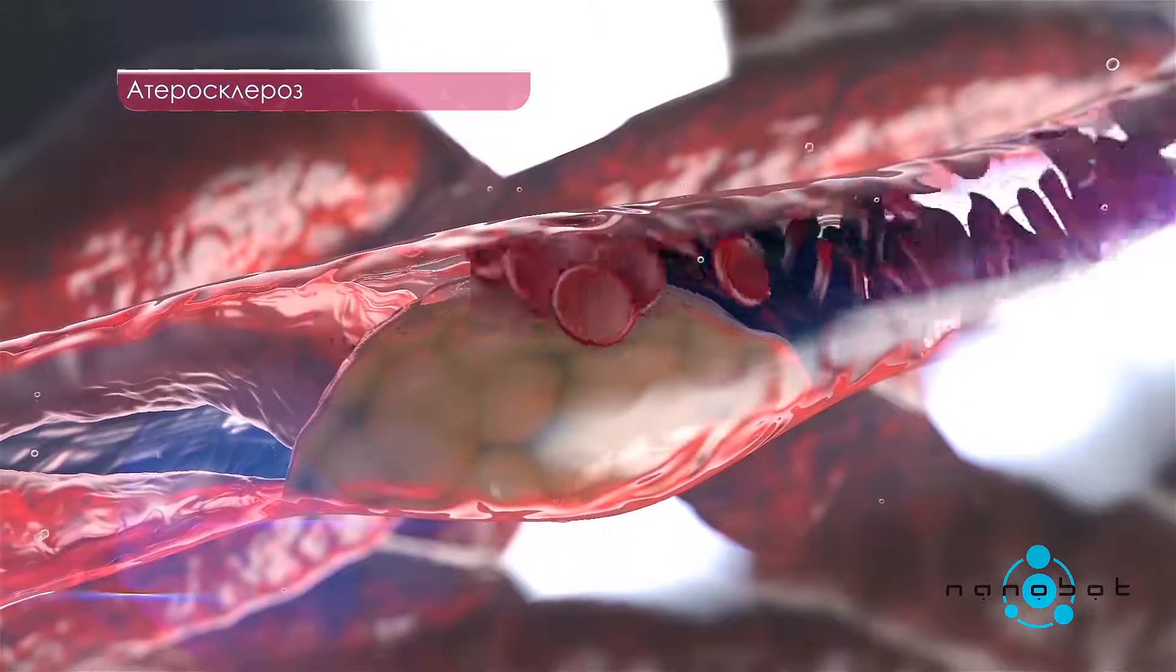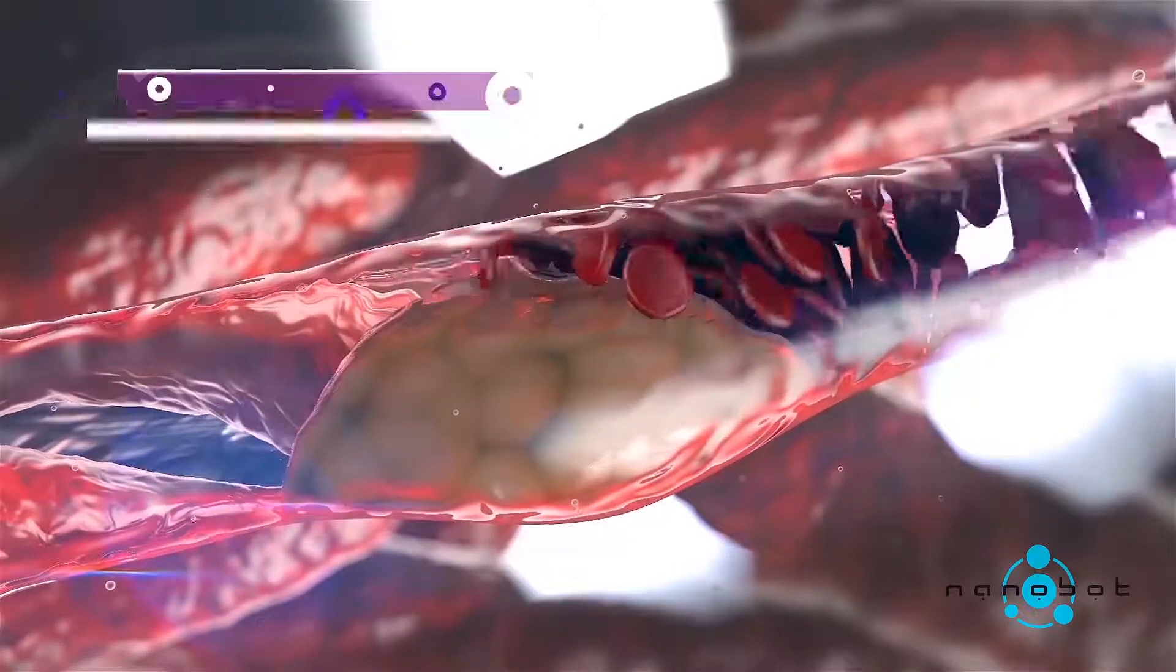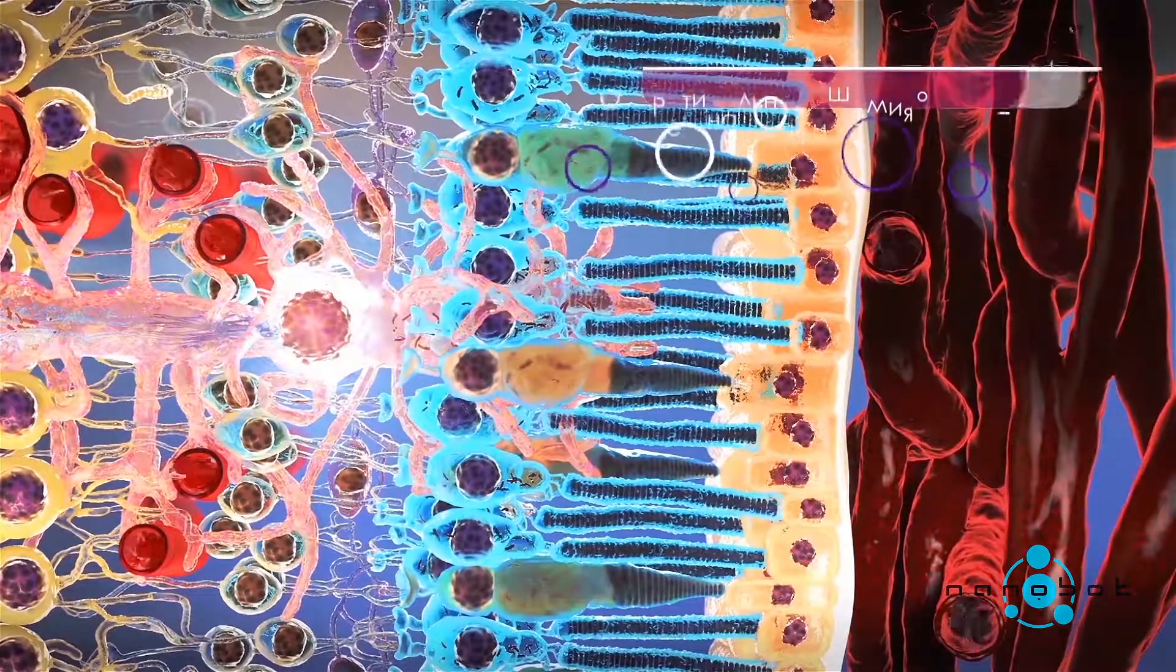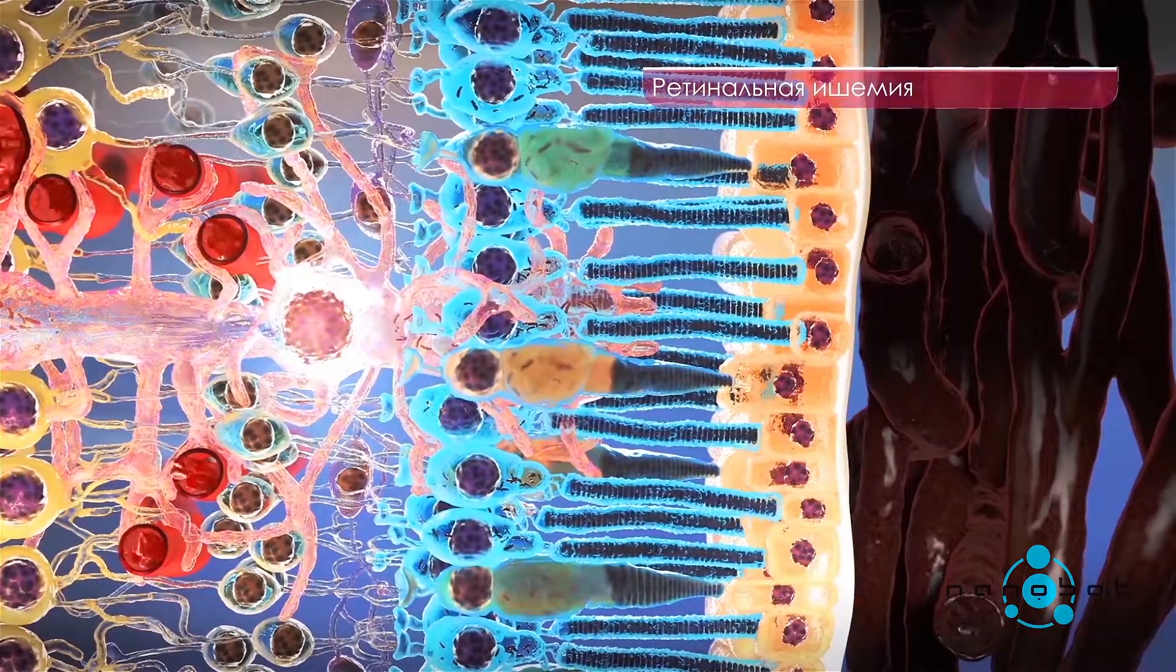When the circulation of blood is disturbed, tissue hypoxia occurs. The tissues suffer from a lack of oxygen and develop retinal ischemia.